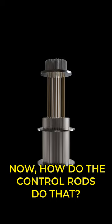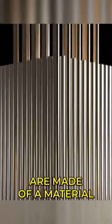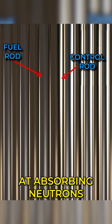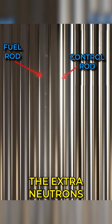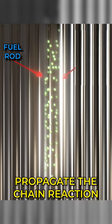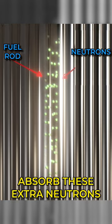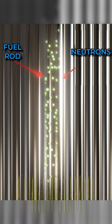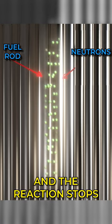Now how do control rods do that? Control rods are made of a material that is very good at absorbing neutrons. So they end up absorbing the extra neutrons that are being produced in the nuclear reaction that propagate the chain reaction. So as the control rods absorb these extra neutrons, there is no way for the chain reaction to continue and the reaction stops.